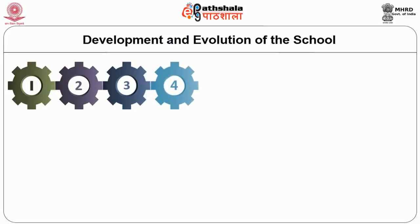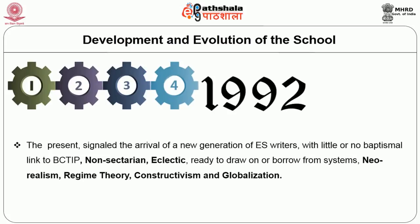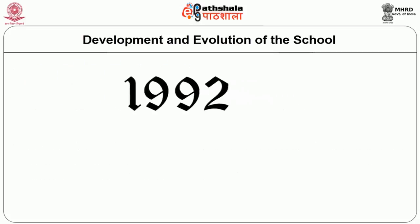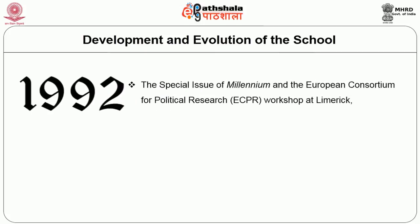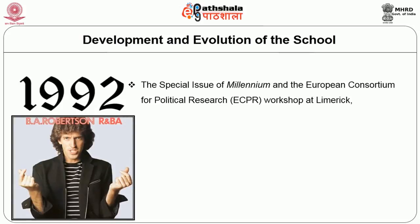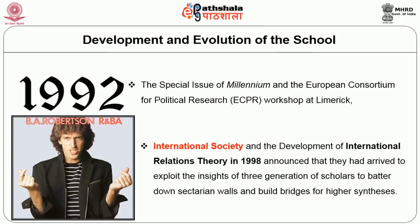The final Phase IV, extending from 1992 to the present, signaled the arrival of a new generation of English school writers with little or no baptismal link to BCTIP — non-sectarian, eclectic, ready to draw on or borrow from systems, neorealism, regime theory, constructivism and globalization. The 1992 special issue of Millennium and the European Consortium for Political Research workshop at Limerick, Ireland in the same year, which culminated in B.A. Robertson's 1998 edited volume International Society and the Development of International Relations Theory, announced that they had arrived to exploit the insights of three generations of scholars and build bridges for higher synthesis.